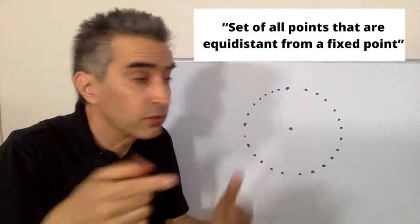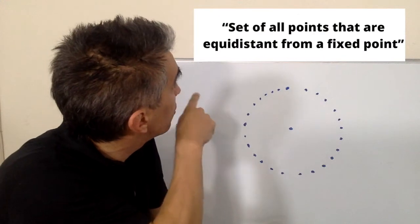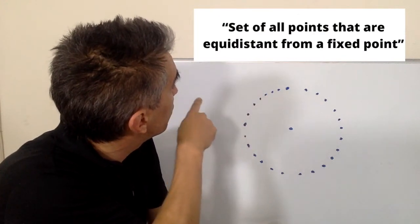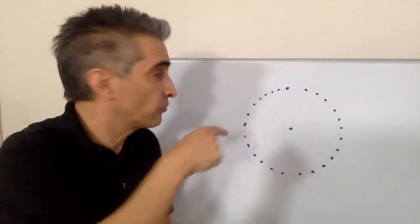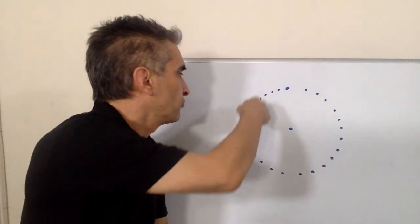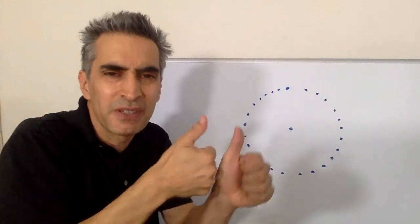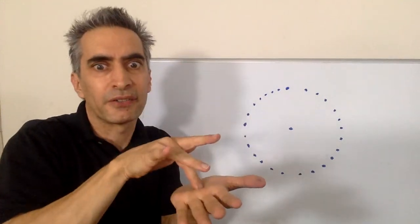What's a circle? That means all the points that are all the same distance from the center.